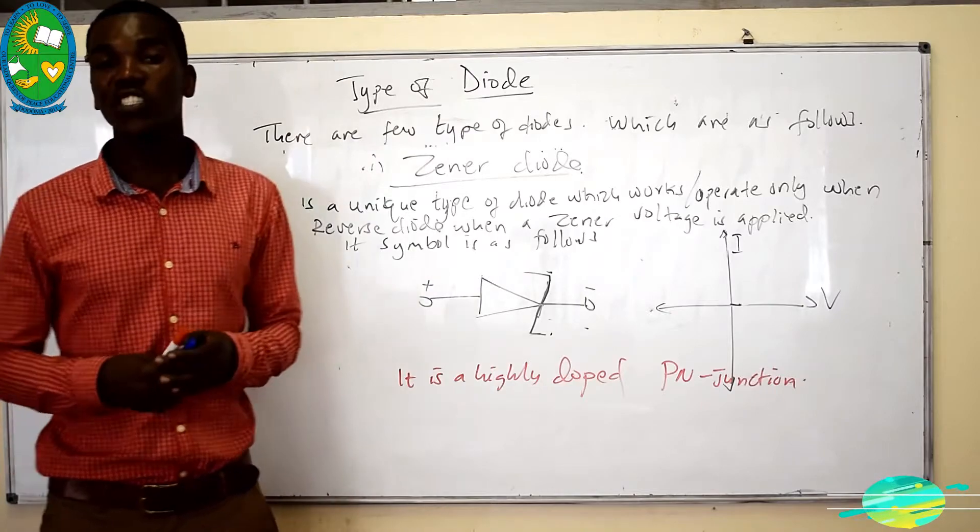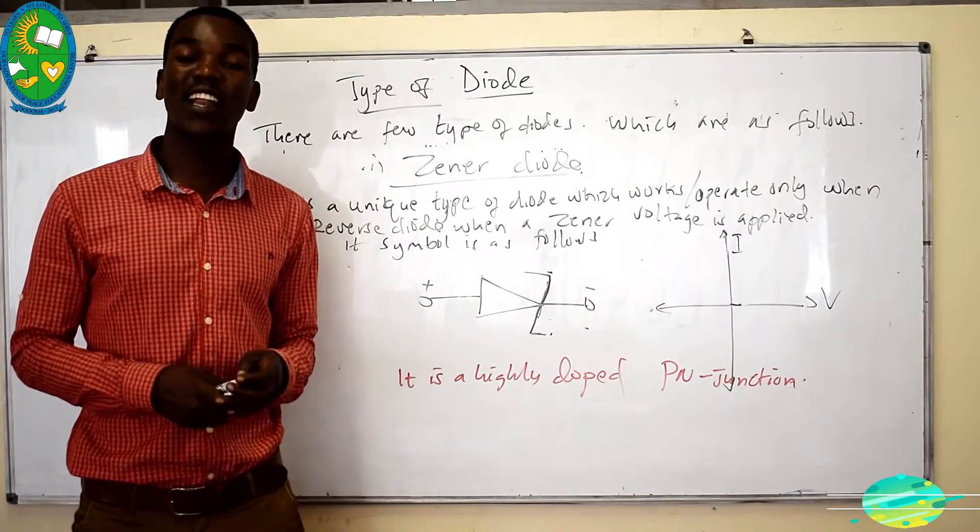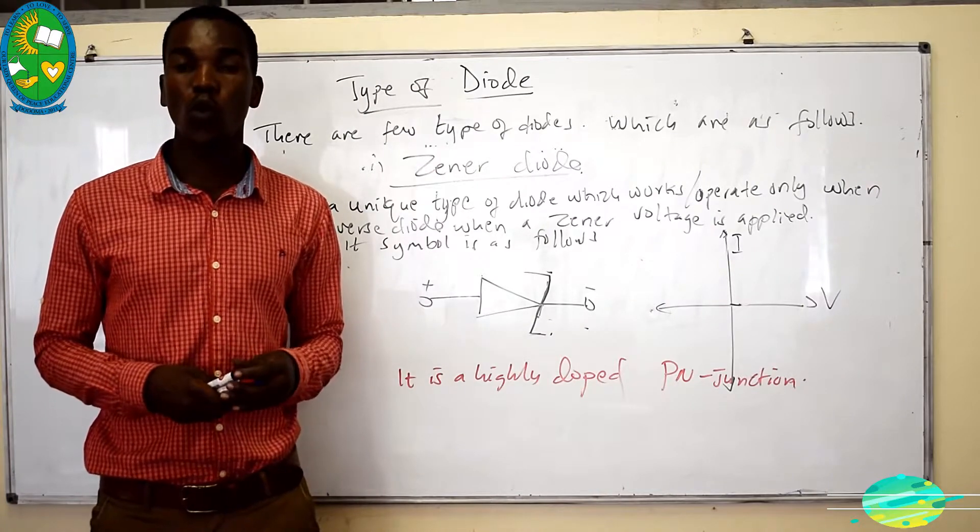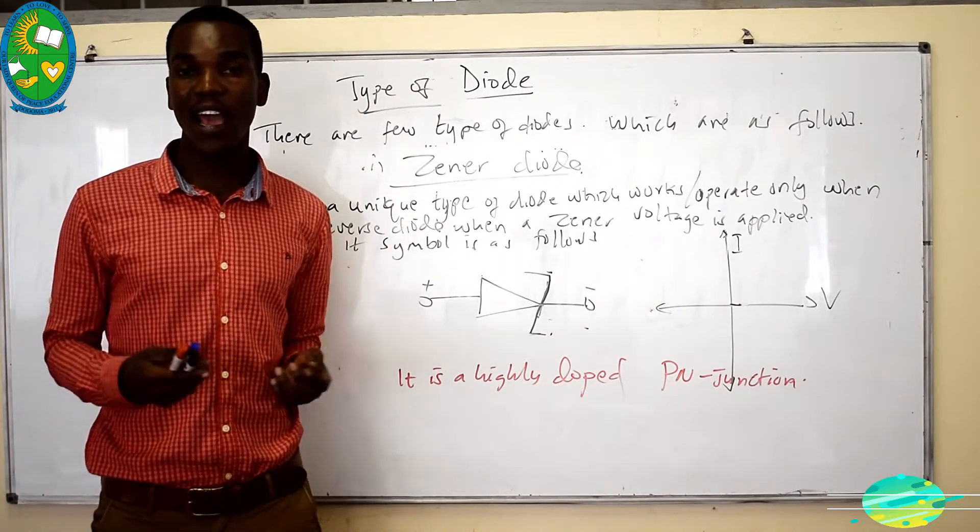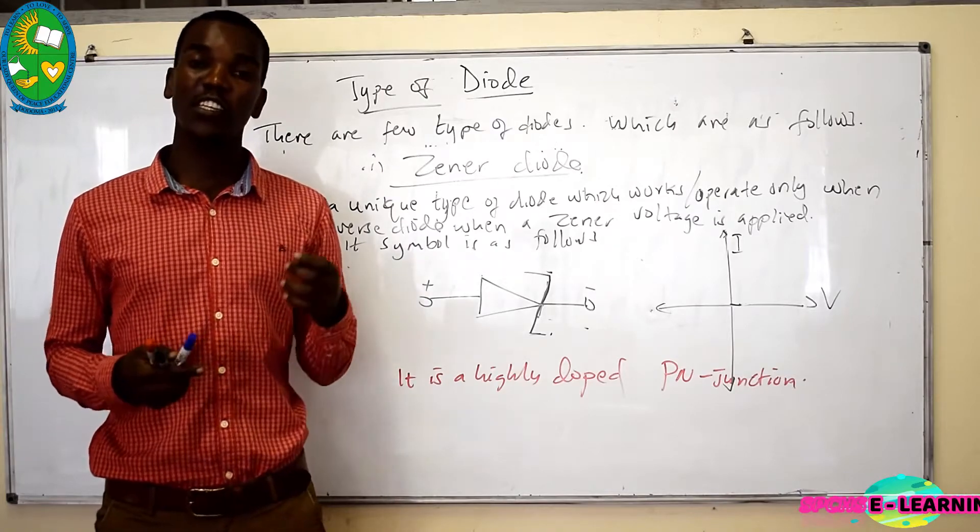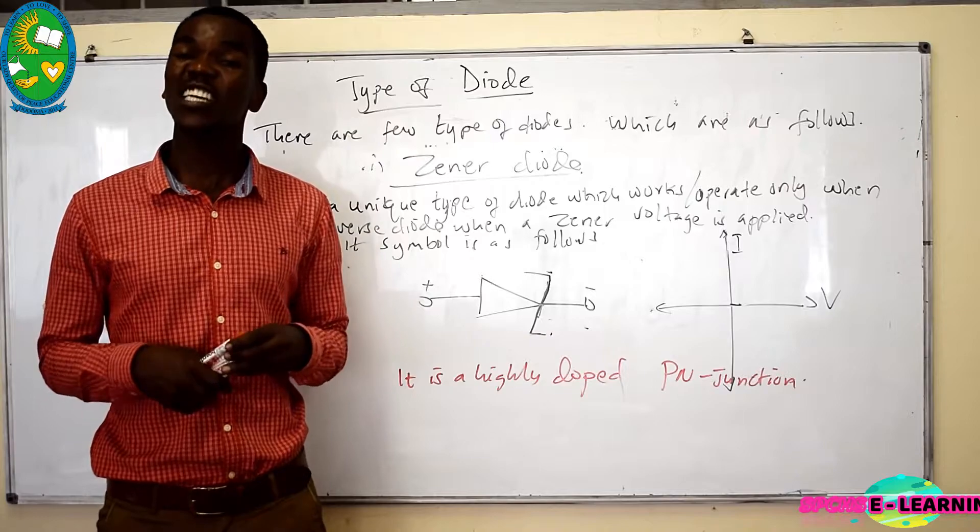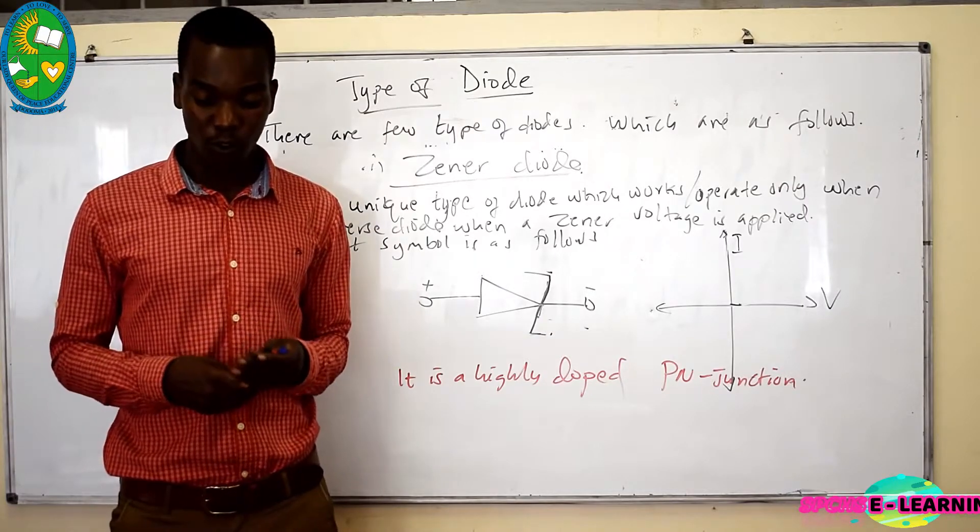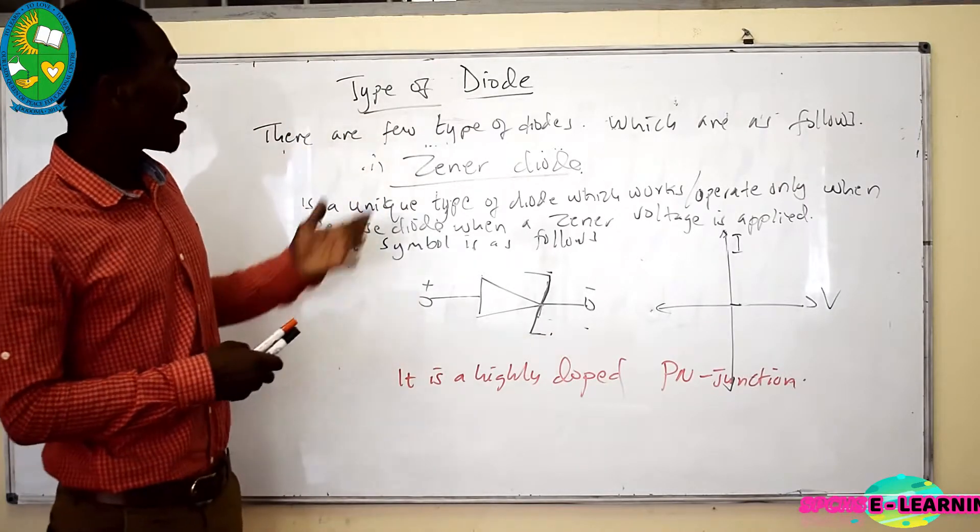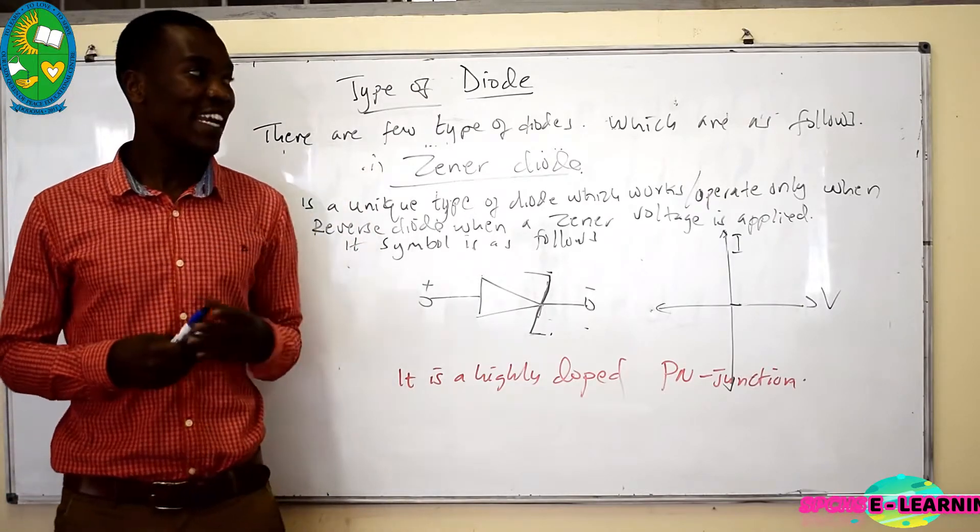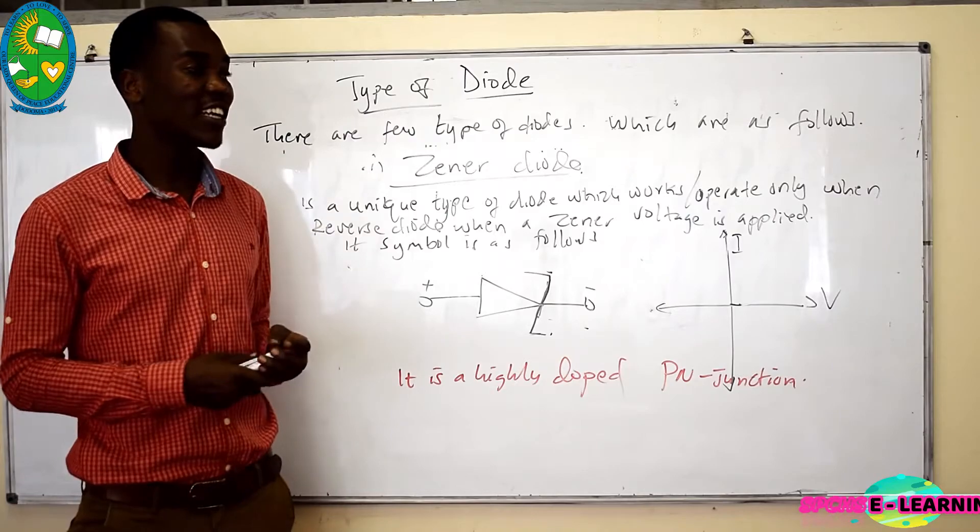Zener diode was named by a scientist known as Clarence Zener who discovered the Zener effect. The Zener effect tells us that if you apply a reverse voltage into a diode it will start to conduct in a reverse bias. So a Zener diode is a unique type of diode which cooperates when it is conducted in a reverse bias.